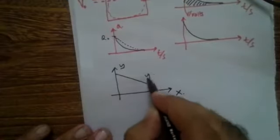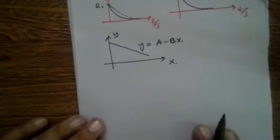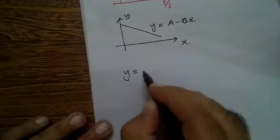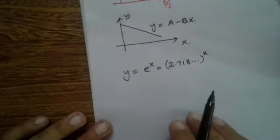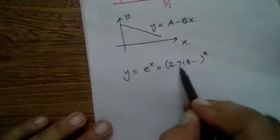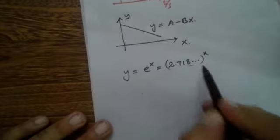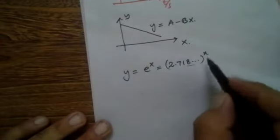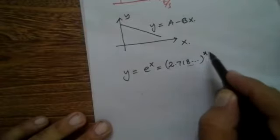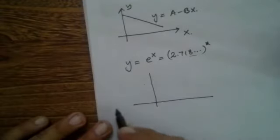We need to find the equation for exponential decrease. For constant decrease we use y = a − bx, but for exponential decrease the equation changes. Consider the expression e^x, where e is the number 2.718... — its decimal portion doesn't end and has no repetition, making it an irrational number. As x increases, e^x gets bigger and bigger, giving an exponential rise graph.